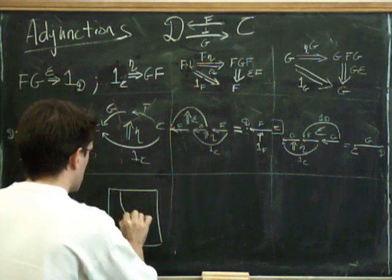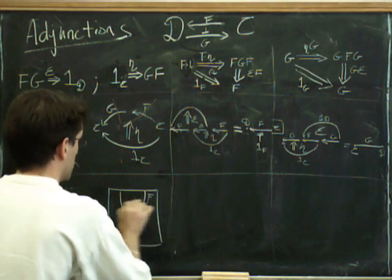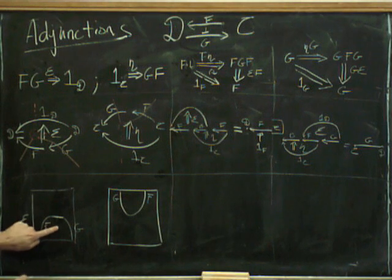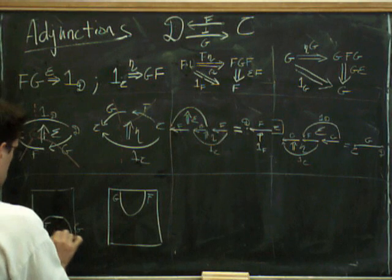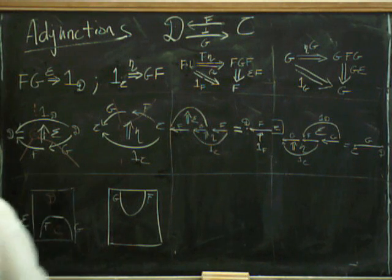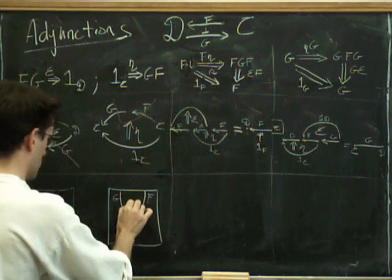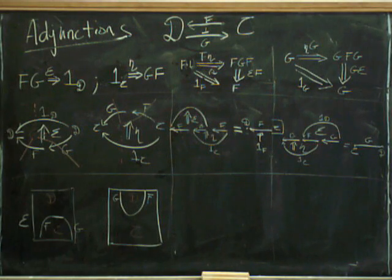And sitting inside here, of course, the thing in the middle here is C. That's the category C. And this region here is the category D. But you get the opposite way around. Here we get C inside and D on the outside.